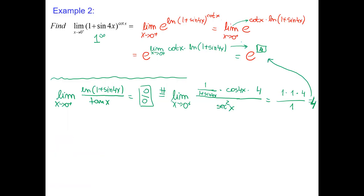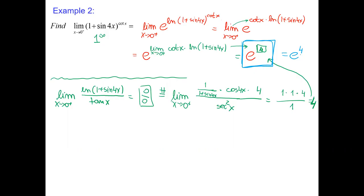The final answer is e to the power of 4. Please remember to always put back the e to the power because that's the value from the exponent. We can see that 1 to the power of infinity gave us a finite number.